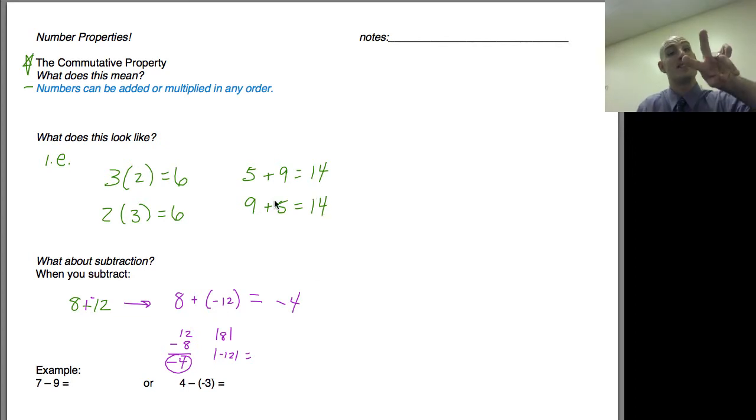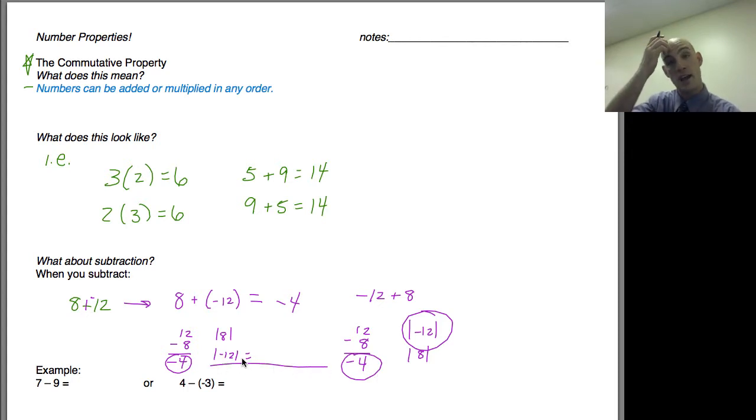What if I added them in the other order? So then I had -12+8. See how I switched the order there? I still have two opposite signs, so I'm going to subtract the easy way, meaning the larger value minus the smaller value. I'm going to get 4, and still when I evaluate the absolute values, this one's bigger. So I'm going to keep that negative sign. I get -4. Same answer. That allows me to say I can still use this with subtraction because I want to make it into an addition problem.